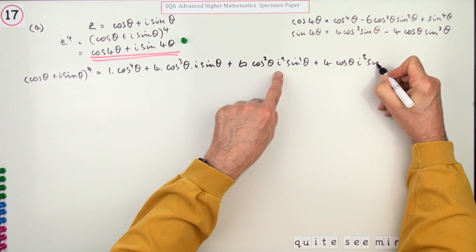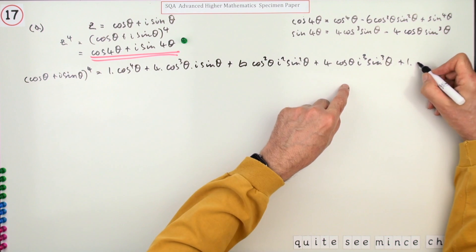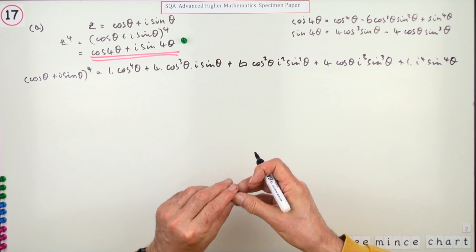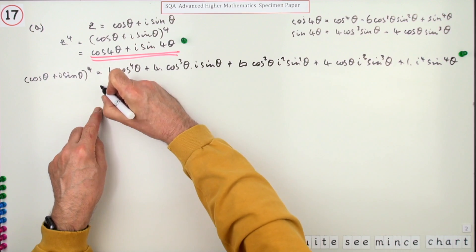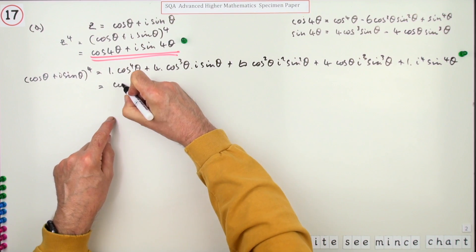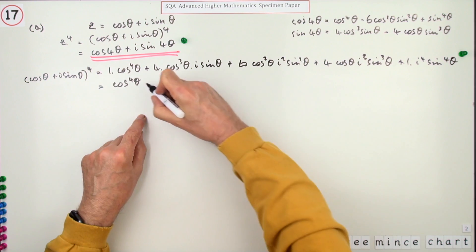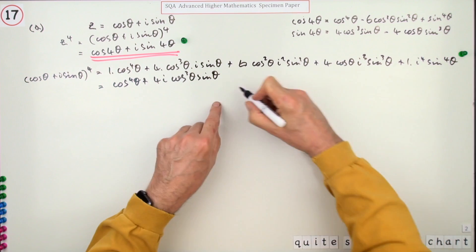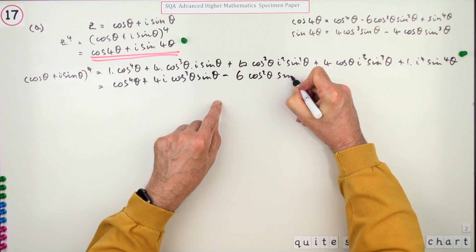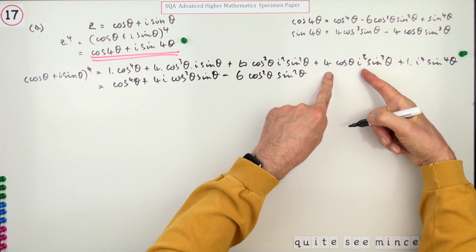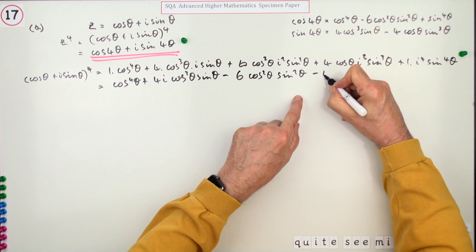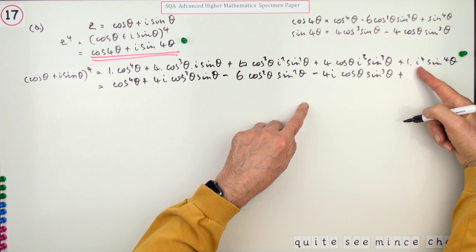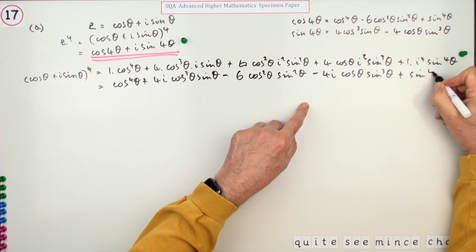Continuing: four times cos θ times i³ sin³θ, then finally one times i⁴ sin⁴θ. There was one mark for starting the binomial expansion. Now tidying up: i² = −1 giving −6 cos²θ sin²θ; i³ = −i giving −4i cos θ sin³θ; and i⁴ = +1 giving +sin⁴θ. So the full expansion is cos⁴θ + 4i cos³θ sin θ − 6 cos²θ sin²θ − 4i cos θ sin³θ + sin⁴θ.